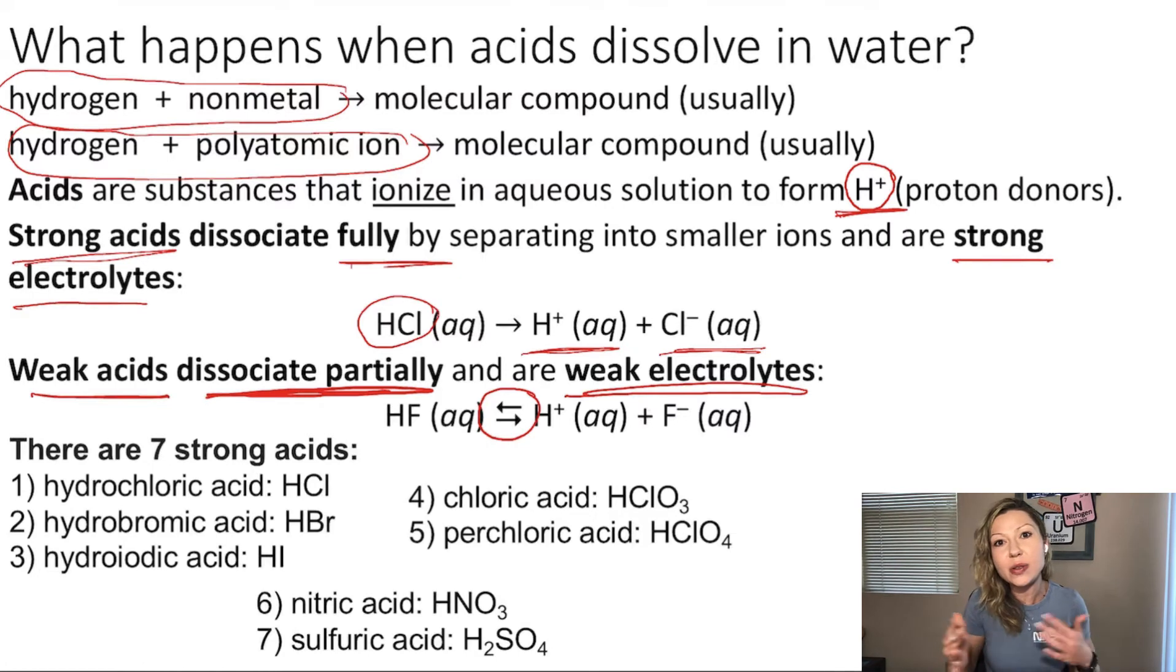The double arrow shows me that some part of hydrofluoric acid would like to dissociate into H plus and F minus, but another part likes to stick together. So how do you know whether an acid is strong or weak? The easiest way is to memorize the seven strong acids.